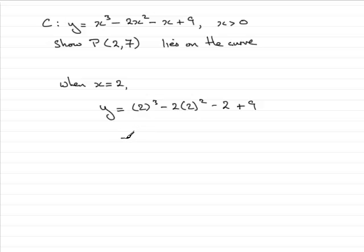If we work that out, 2 cubed is 8, and 2 times 2 squared is also 8, so that's 8 minus 8 minus 2 plus 9. Group those terms up and what you get is 7.